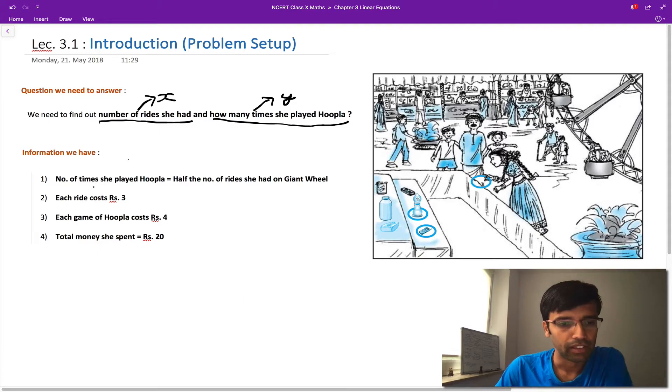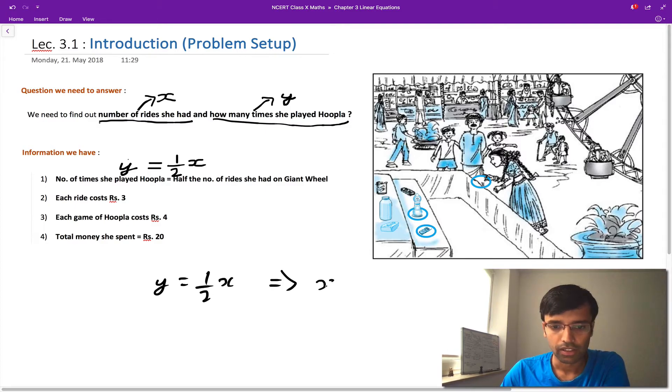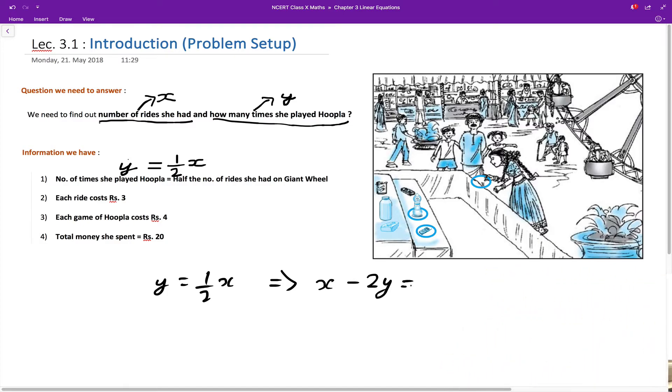Now let us begin by writing these equations. What we have here in words, we try to write in the terms of equations. The number of times she played hoopla, that is y, is half the number of times she went on the giant wheel ride, so y will be equal to 1 by 2 times x. Okay, so we just got our first equation. Let me write it here: y is equal to 1 by 2 x, or you can write it as x minus 2y is equal to 0. So this is our first equation.